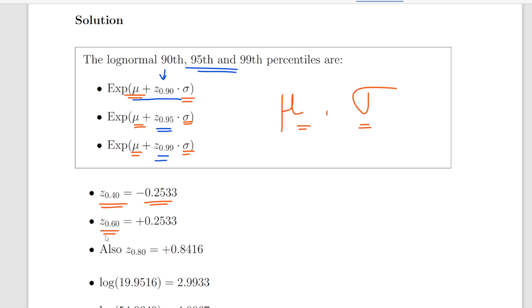And the 60th is plus 0.2533. That sort of makes sense because they are equidistant from the 50th percent, so there should be negations of each other. Later on we're going to use this Z score as well, 0.8416.